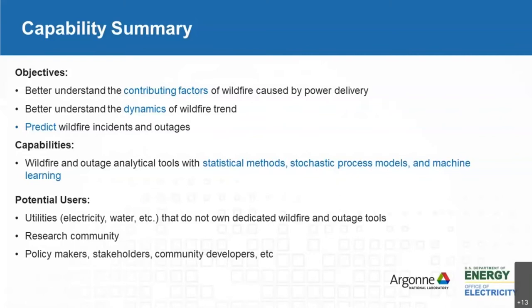What do we mean by risk modeling? First, we want to understand the contributing factors to wildfire and their importance — can we prioritize them? Then we look at whether we can predict and forecast so we can better prepare. The capabilities here include a set of statistical methods, stochastic process models, and machine learning. The stochastic process models random events on a time series, which is different from pure statistical models. Our potential users include utilities that don't have dedicated analytical tools for wildfire, as well as policymakers and data developers who want to look at fire risk in their area.